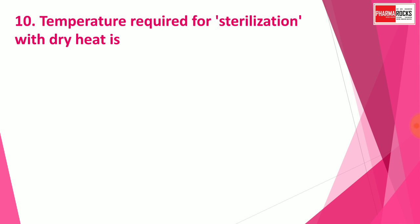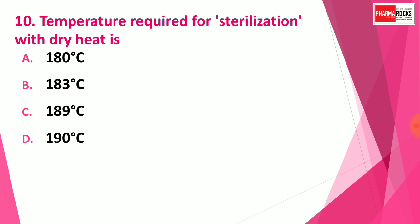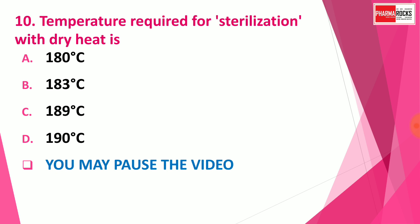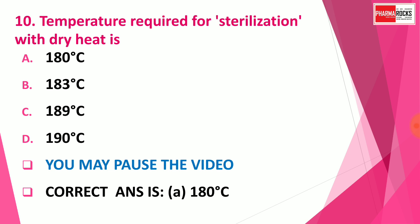Question number 10. The temperature required for sterilization with dry heat is — Option A: 180°C, Option B: 183°C, Option C: 189°C, and Option D: 190°C. You may pause the video to think about the correct answer. The correct answer is Option A, 180°C. The temperature required for dry heat sterilization is in the range of 160 to 180°C. In this question, the nearest option is 180°C, so select Option A. If options are given as a range, then select 160 to 180°C for dry heat sterilization.